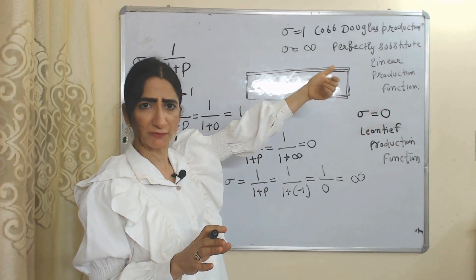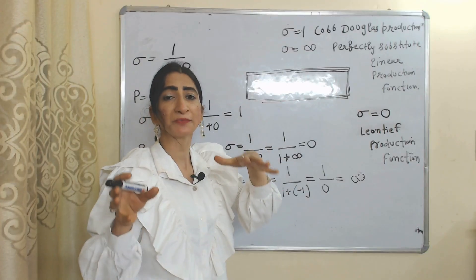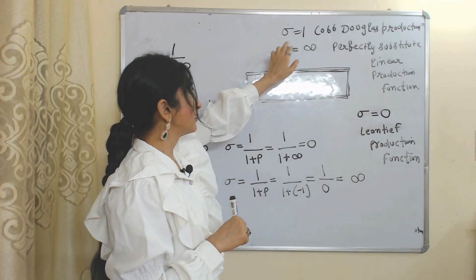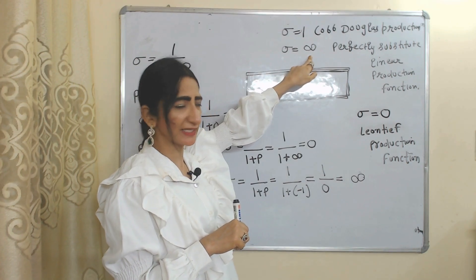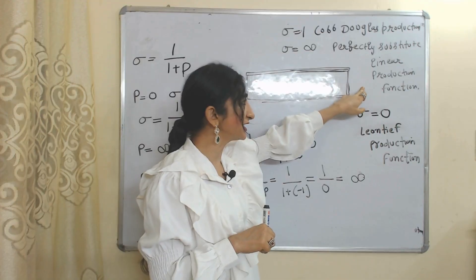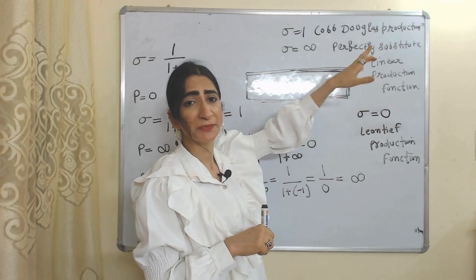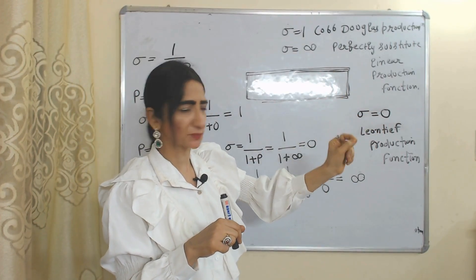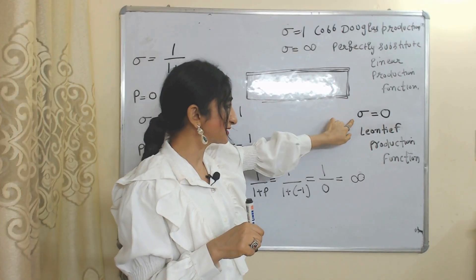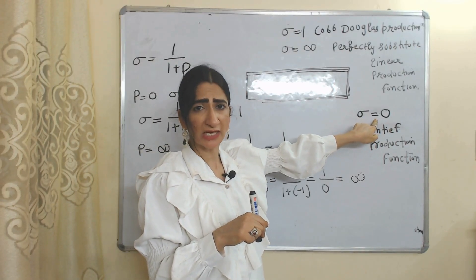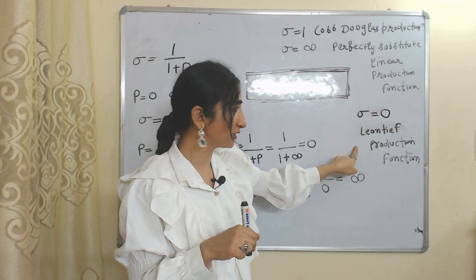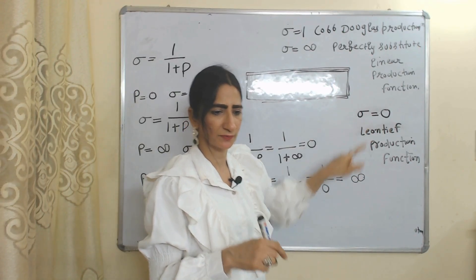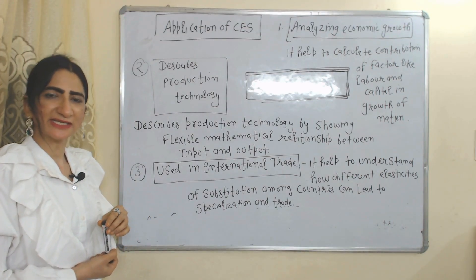When elasticity of substitution equals 1, CES production function becomes Cobb-Douglas production function. When elasticity of substitution equals infinity, CES becomes a linear production function, meaning inputs are perfectly substitutable. When elasticity of substitution equals zero, CES becomes the Leontief production function, since Leontief assumes zero elasticity of substitution.